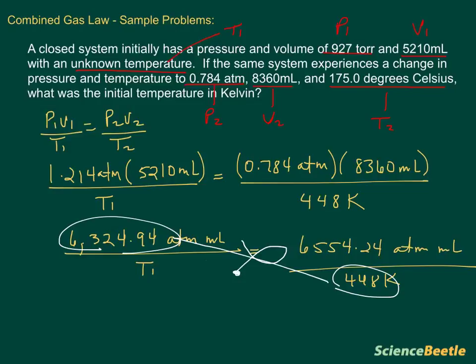And then once we've got that number, we're going to go ahead and divide it by the 6,554.24. So divide it by 6,554.24. When you do all of this math, your T1 that you wind up getting is the following.